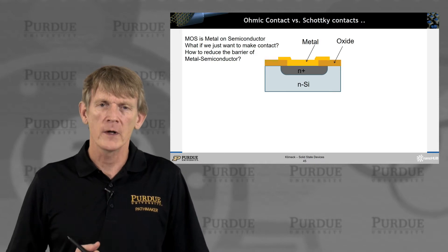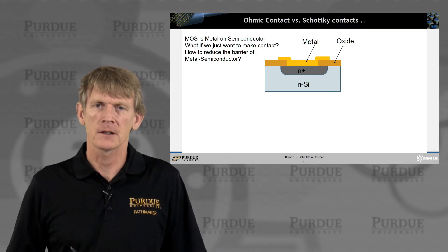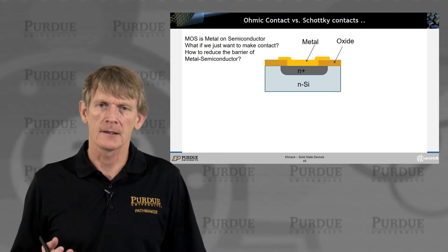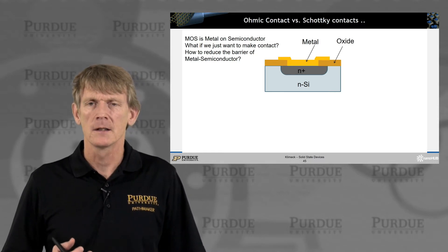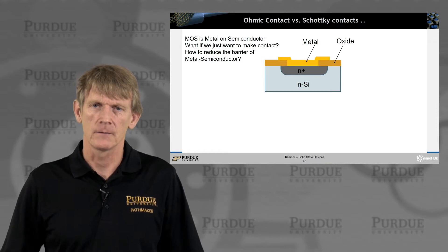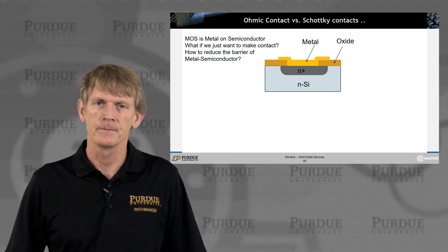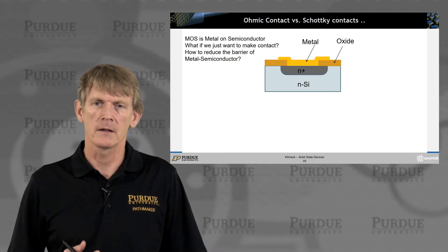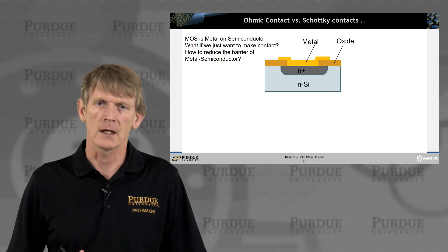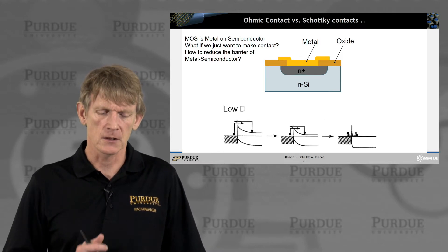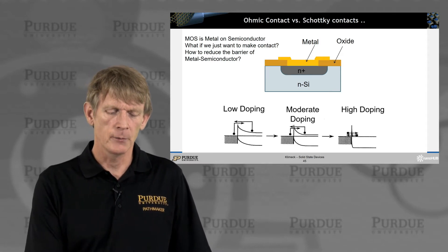I want to start talking about Ohmic versus Schottky contacts. So we always have metal and semiconductor devices in our modern devices, right? We have a metal via ultimately connecting to a transistor. That transistor is going to be in silicon, and we would like to make sure that we have a very good contact, that electrons flow very well. But how do you do that? Because you always have a structure that looks like you have a big barrier.